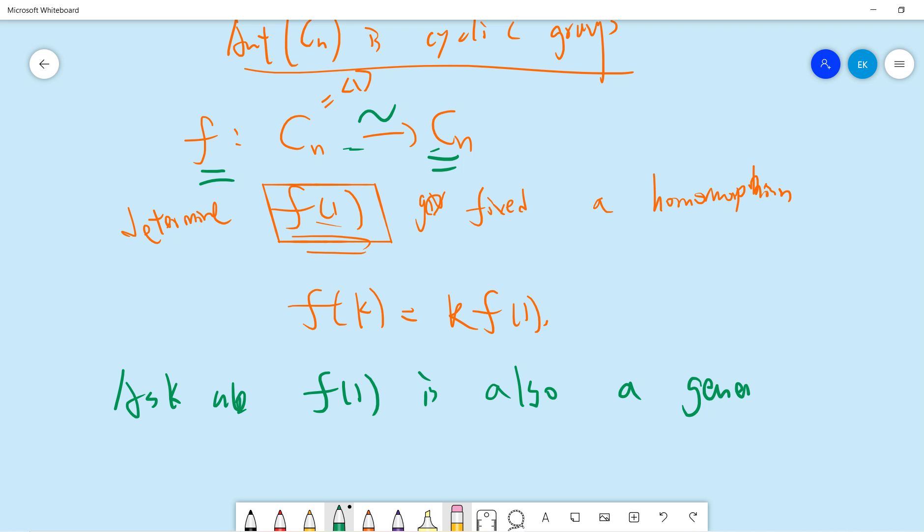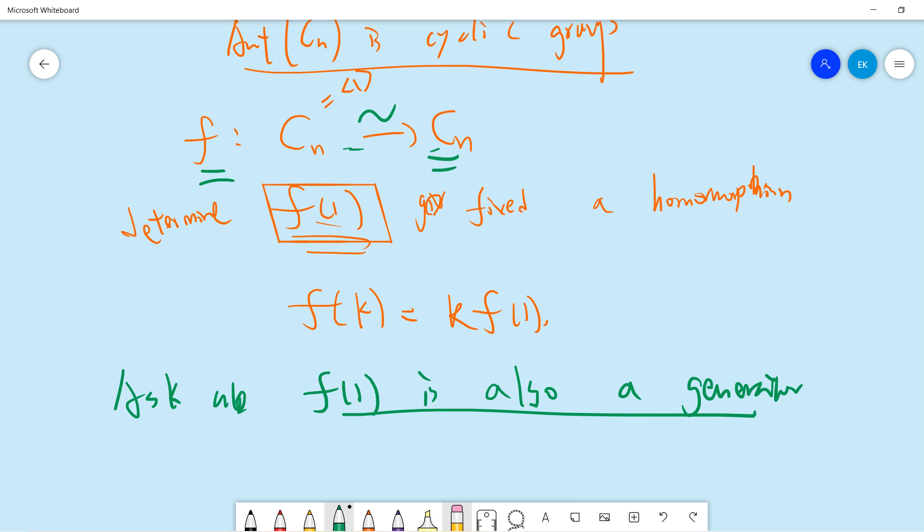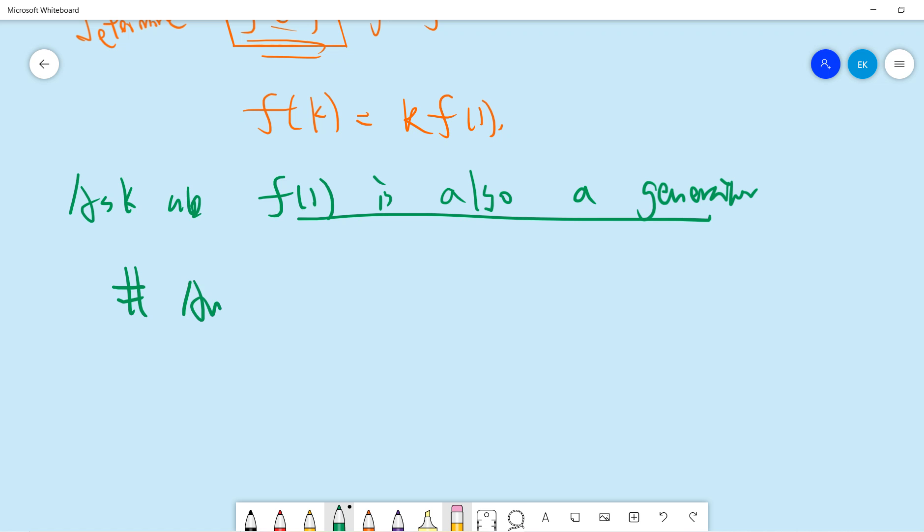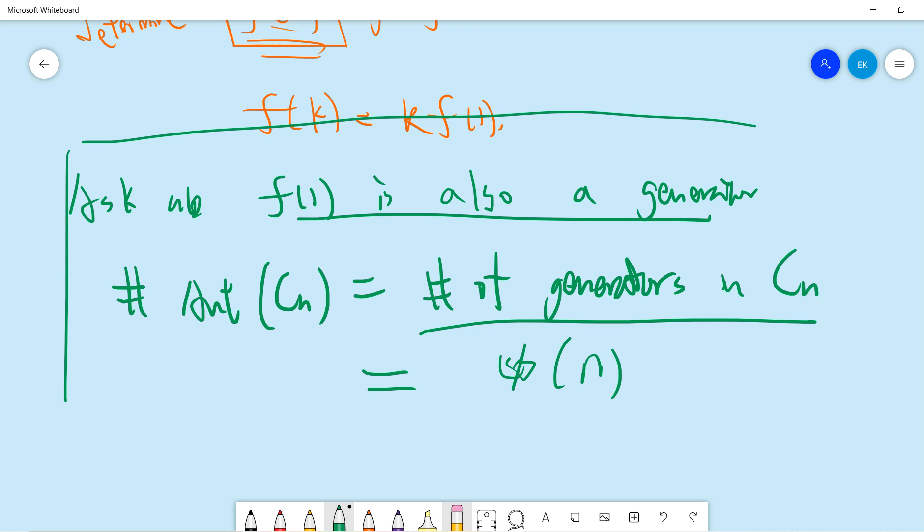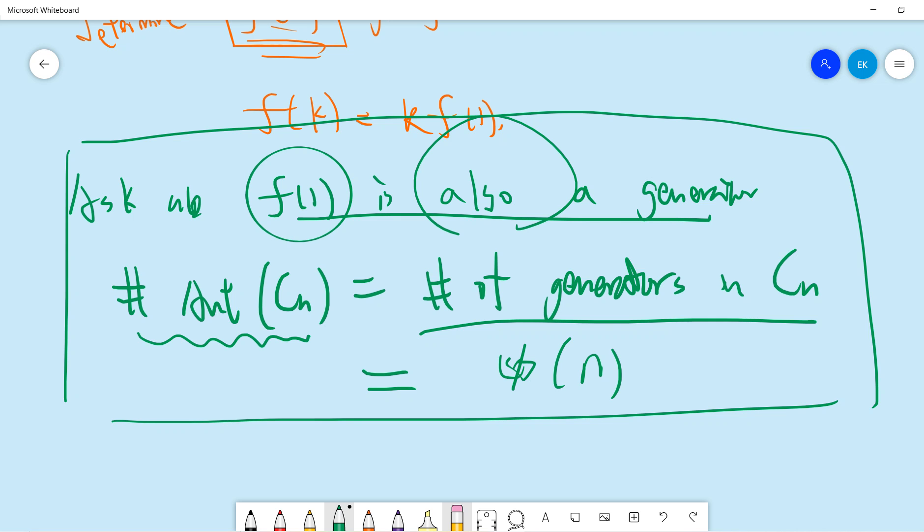That means the number of automorphisms of Cn equals the number of generators in Cn. By definition, the number of generators is all numbers coprime to n, which is phi(n). Since it's isomorphic, f(1) is also a generator, so the number of automorphisms of Cn is the number of generators in Cn, which is phi(n).